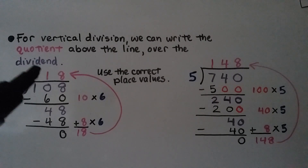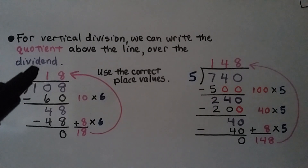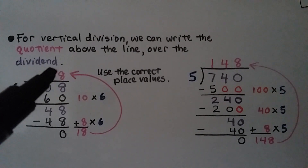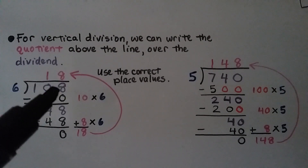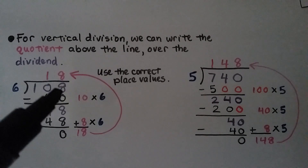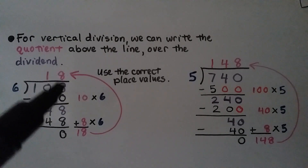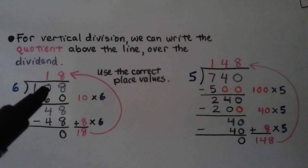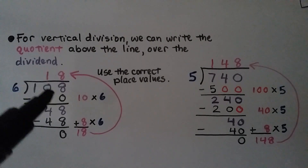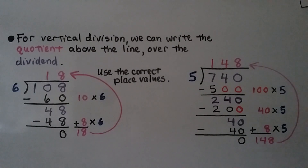We add 10 plus 8 and get 18. We write it above the line over the dividend using correct place values. The 8 is in the ones place for 18, and the 8 in 108 is in the ones place — so we put them in the correct place value. The 1 is in the tens place, and the 0 in 108 is in the tens place. We have them directly in line.